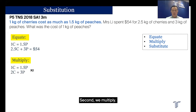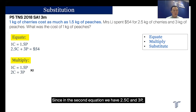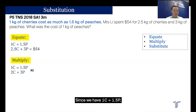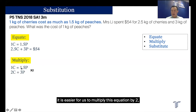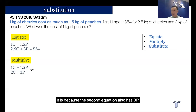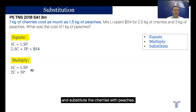Second, we multiply. Since in the second equation we have 2.5c and 3p, we have to decide whether we want to change everything to cherries or change everything to peaches. Since we have 1c = 1.5p, it is easier to multiply the equation by 2 to get 2c = 3p. Why do we want 3p? It is because the second equation also has 3p, so this allows us to multiply only one of the equations and then substitute cherries with peaches.